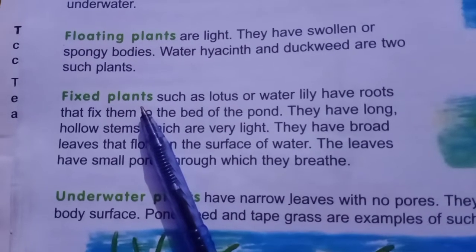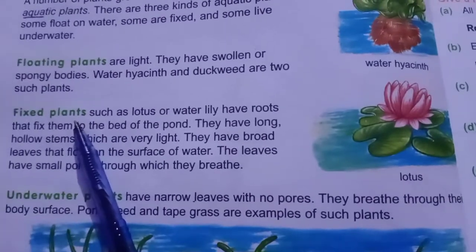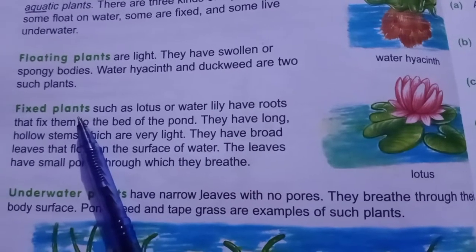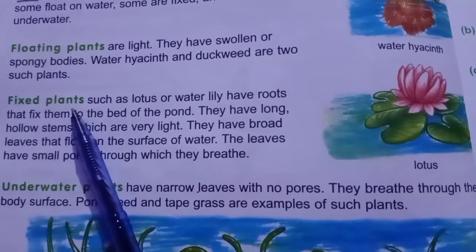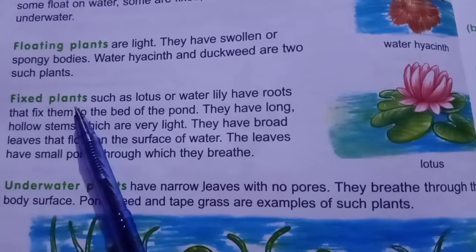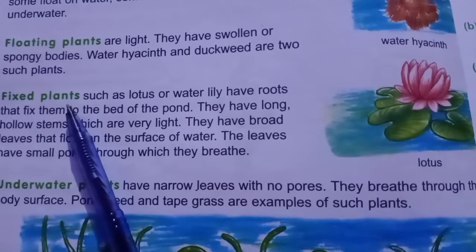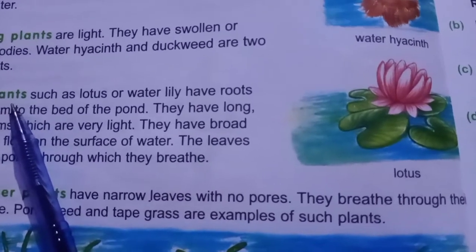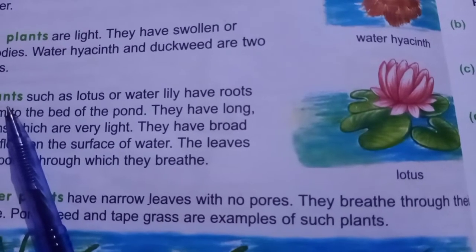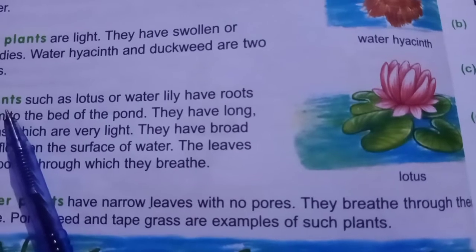Now I am telling you about fixed plants. Lotus and water lily are examples of fixed plants. Such plants are attached to the pond's bed — یہ plants pond's bed کے ساتھ attached ہوتے ہیں۔ ان کے stems long اور بہت زیادہ light ہوتے ہیں۔ ان کے leaves پانی کے اوپر float کرتے یعنی تیرتے ہوئے نظر آتے ہیں اور بہت broad ہوتے ہیں۔ انہی leaves میں چھوٹے چھوٹے pores یعنی سراخ ہوتے ہیں جن کی مدد سے یہ plants breathing کرتے اور survive کرتے ہیں۔